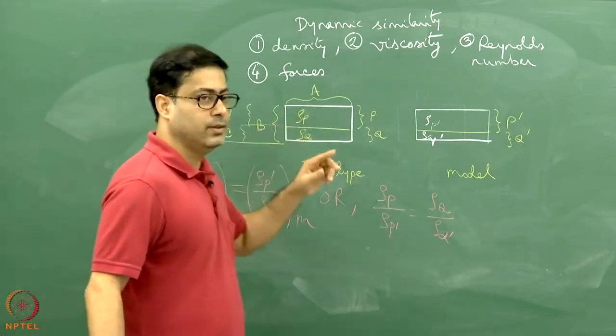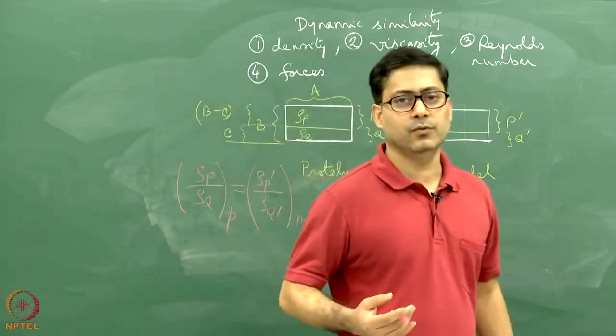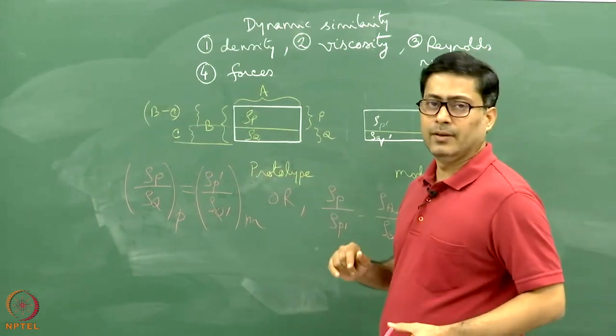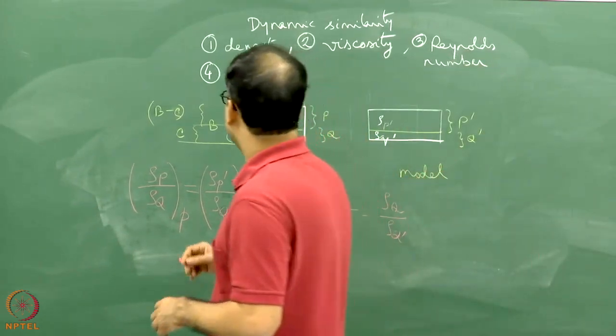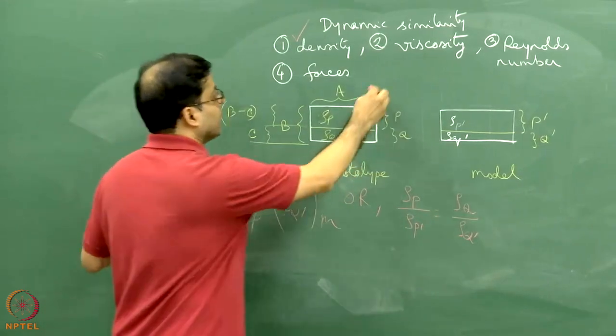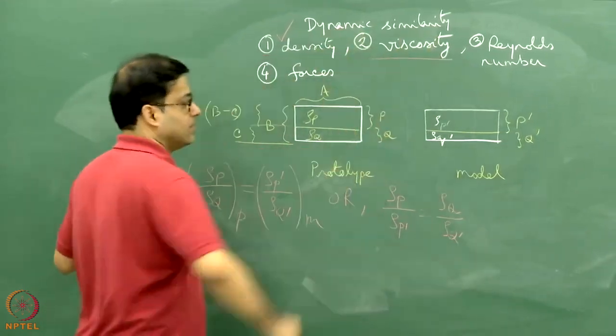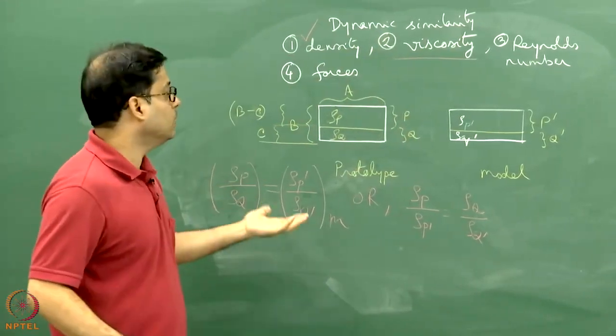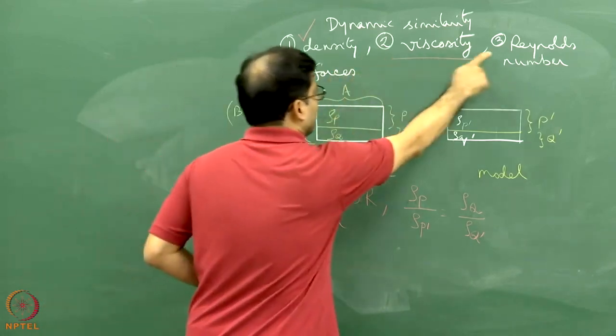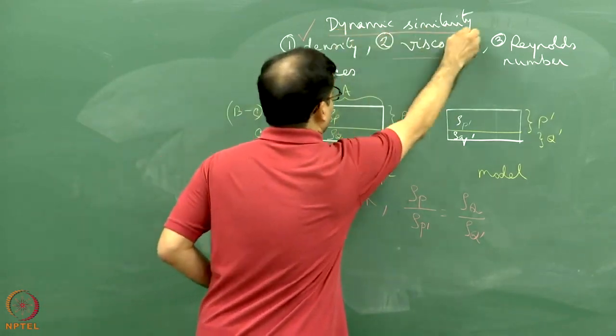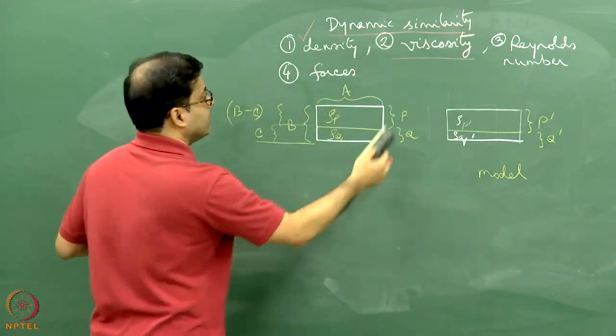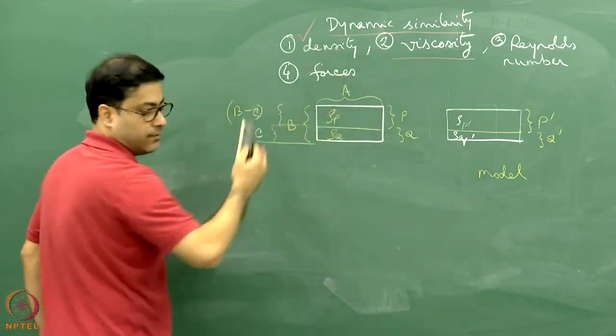So what I demonstrated with the two layers will also be true for more than two layers, three, four layers. Similarly ratioing can be made. So that was the issue of density. Now we are going to see the issue of viscosity and for more than one rock unit how the viscosity will be taken care, all under the umbrella of dynamic similarity. Here the approach is very similar to what we did for density.